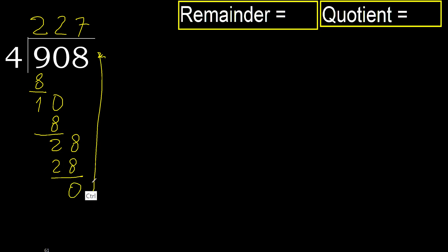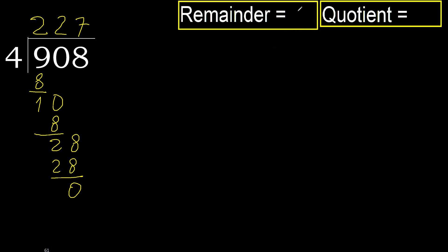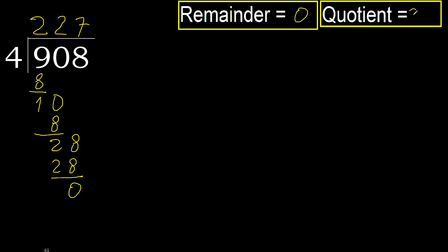There is no next digit, therefore finish. Remainder is 0. Therefore 908 divided by 4 is 227.